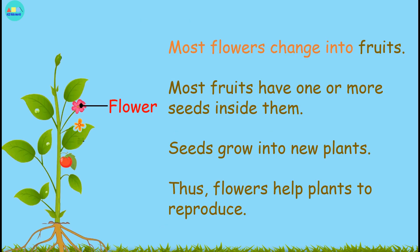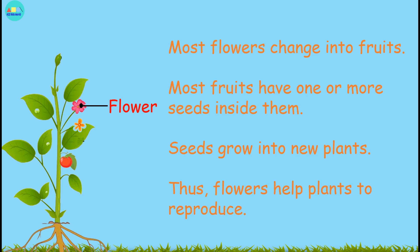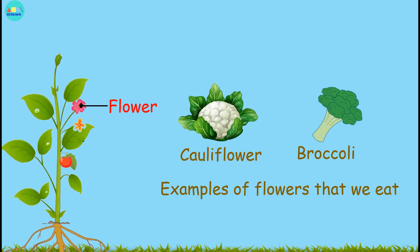Most flowers change into fruits. Most fruits have one or more seeds inside them. Seeds grow into new plants. Thus flowers help plants to reproduce. Cauliflower and broccoli are examples of flowers that we eat.